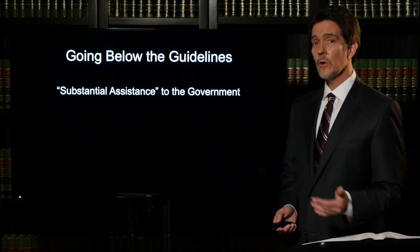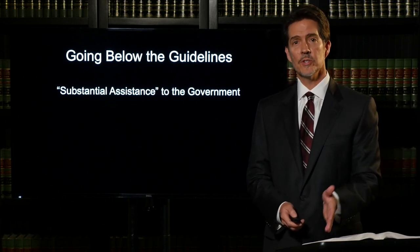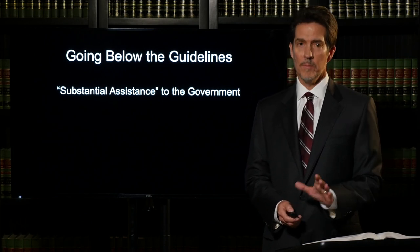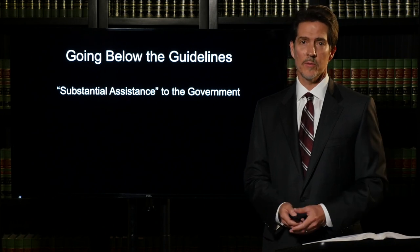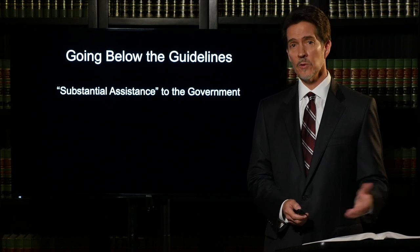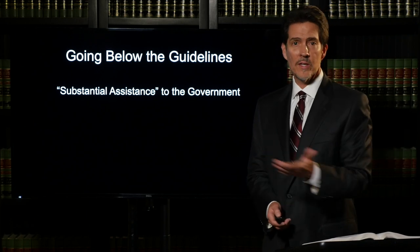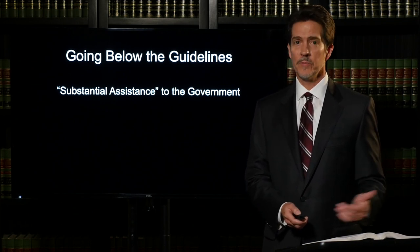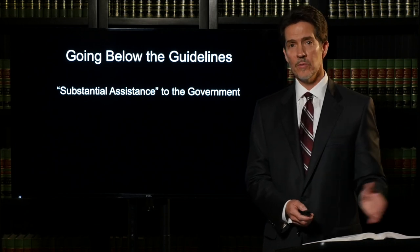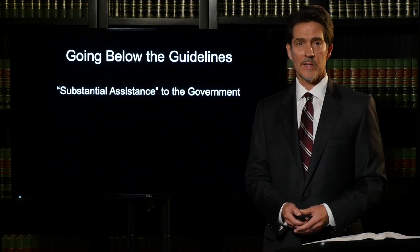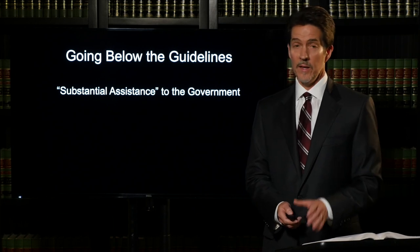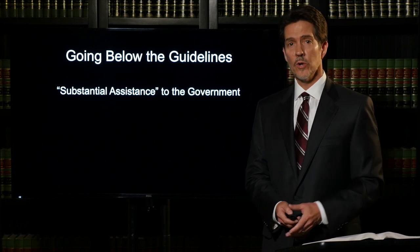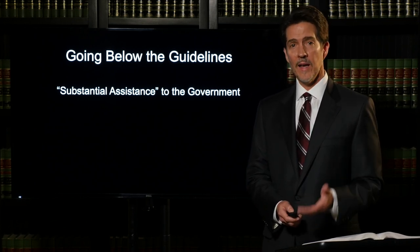A good lawyer will try to do everything possible to get the client sentenced below that advisory guideline range. The first and most common way in federal court is that the defendant has provided substantial assistance to the government — cooperating. If you're involved in a case and decide to enter a guilty plea, it may help to work with the government, talk about your involvement, and offer information about other people. It does require substantial assistance though — your information must actually help the government further their investigation, and it's ultimately up to the government to go to the judge and recommend a reduction.